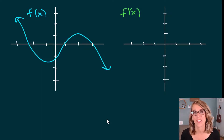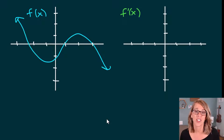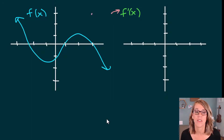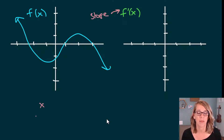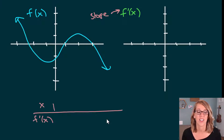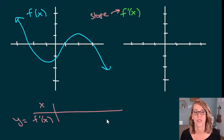We're going to do lots of examples of sketching the graph of the derivative of a function. I've got this function f and I want to graph its derivative. When graphing the derivative, I am graphing slope values. I want to come up with a t-table with x's and f prime of x's — those are going to be the y-values for our new graph.